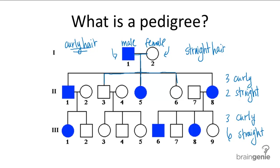From this pedigree, we can also tell that curly hair is a dominant trait. And why do I say that? It's because if you look at all the couples that have a curly haired individual, they have children that have curly hair.